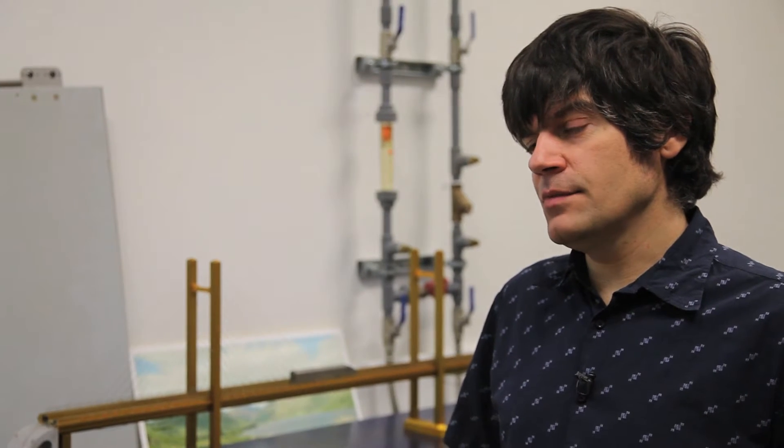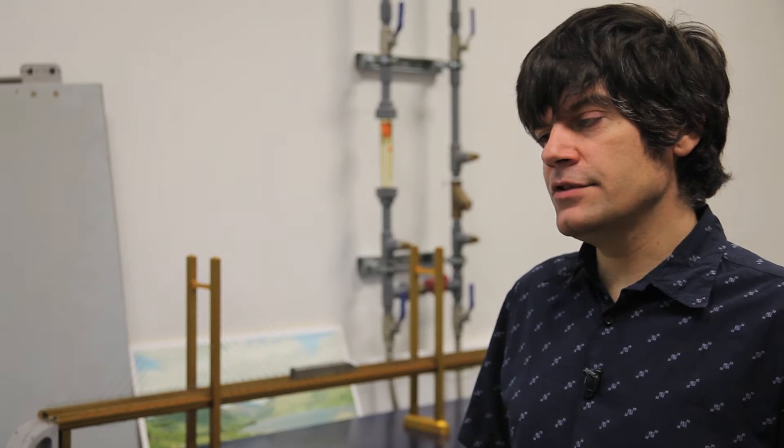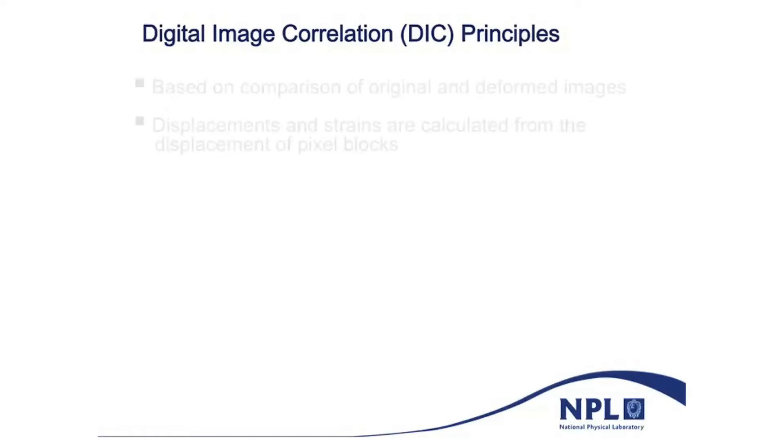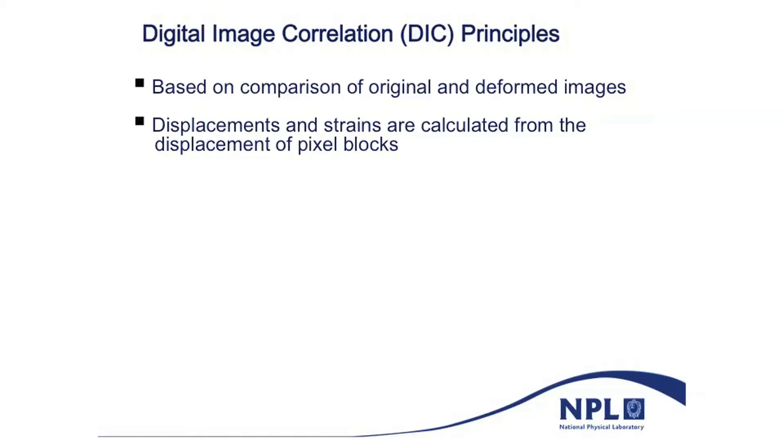By making measurements on those structures, we can actually help to determine their condition and see how long they can last. We've developed this technique called digital image correlation, which we've used in the laboratory. I first started working on it in the mid-1980s, but in those days we didn't really have sufficiently high resolution cameras or enough computing power to do it very effectively. But more recently, cameras have become low cost, we can get very high resolution cameras, and we've got lots of processing power.